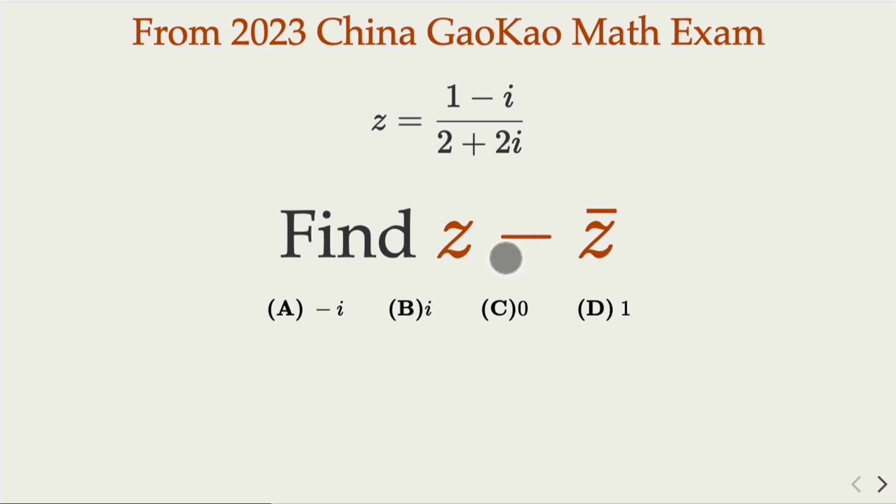We try to find z minus the conjugate of z. Notice that typically what you want to do for this kind of complex number, you want to multiply the denominator, the complex conjugate of it, so that you kind of rationalize it. So let's do that.